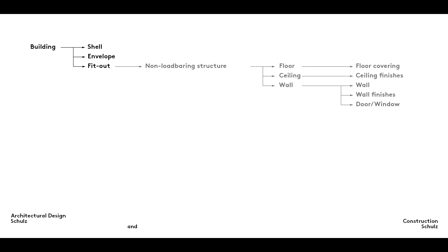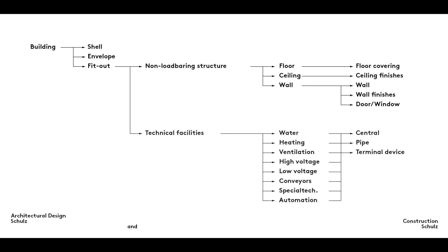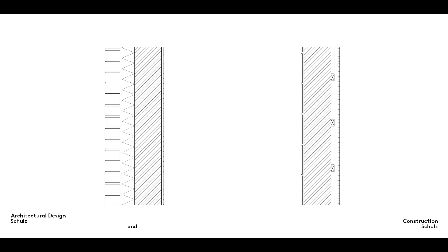A building fit out covers two areas: the non-load bearing structure and building services. Walls that form part of the non-load bearing structure are divided into partition walls, wall finishes and doors and windows. The term wall finishes comes from German standard DIN 276, which deals with building construction costs. It classifies exterior walls in cost group 330 and interior walls in cost group 340.